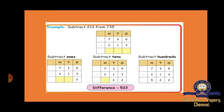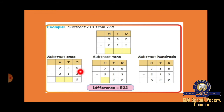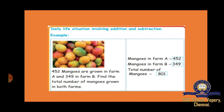Next, subtract 213 from 735, which is 735 minus 213. Write it with hundreds, tens, and ones. Ones place: 5 minus 3 equals 2. Tens place: 3 minus 1 equals 2. Hundreds place: 7 minus 2 equals 5. The answer is 522.